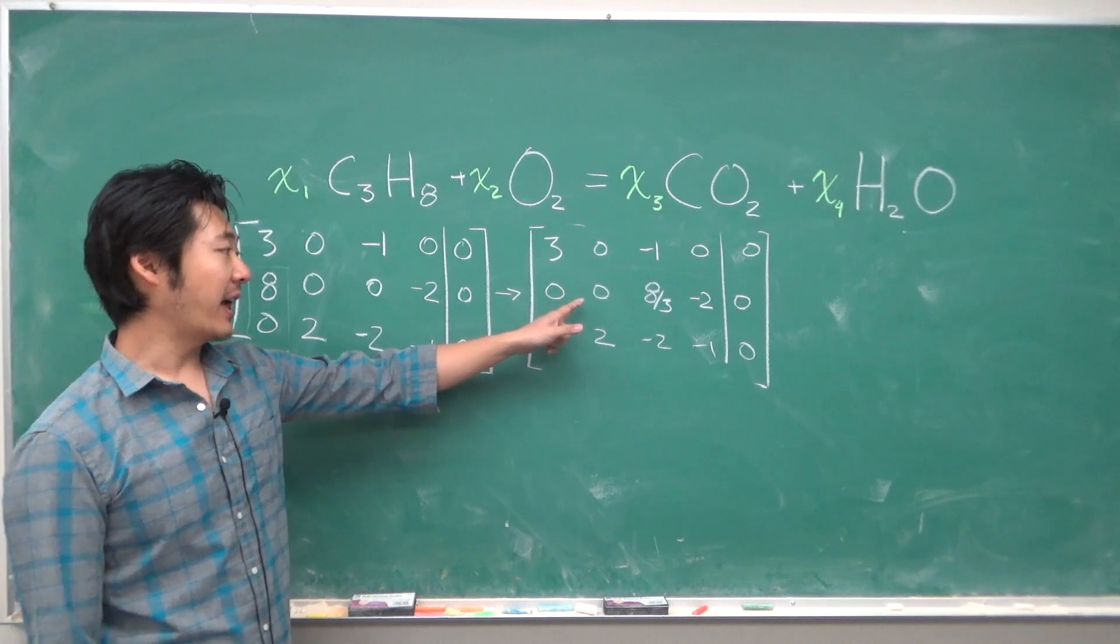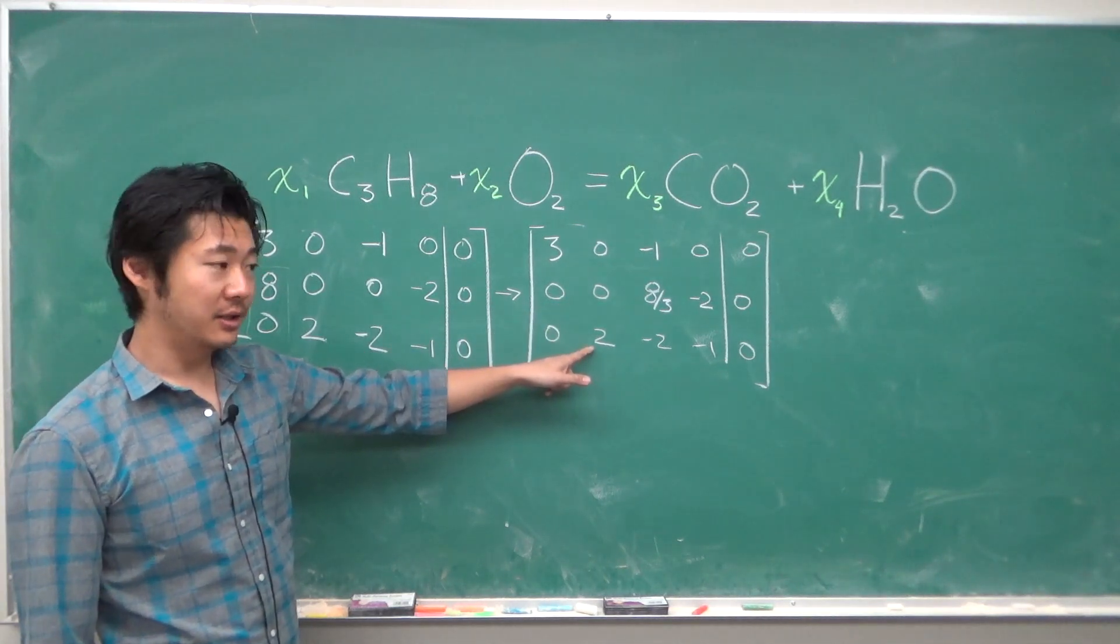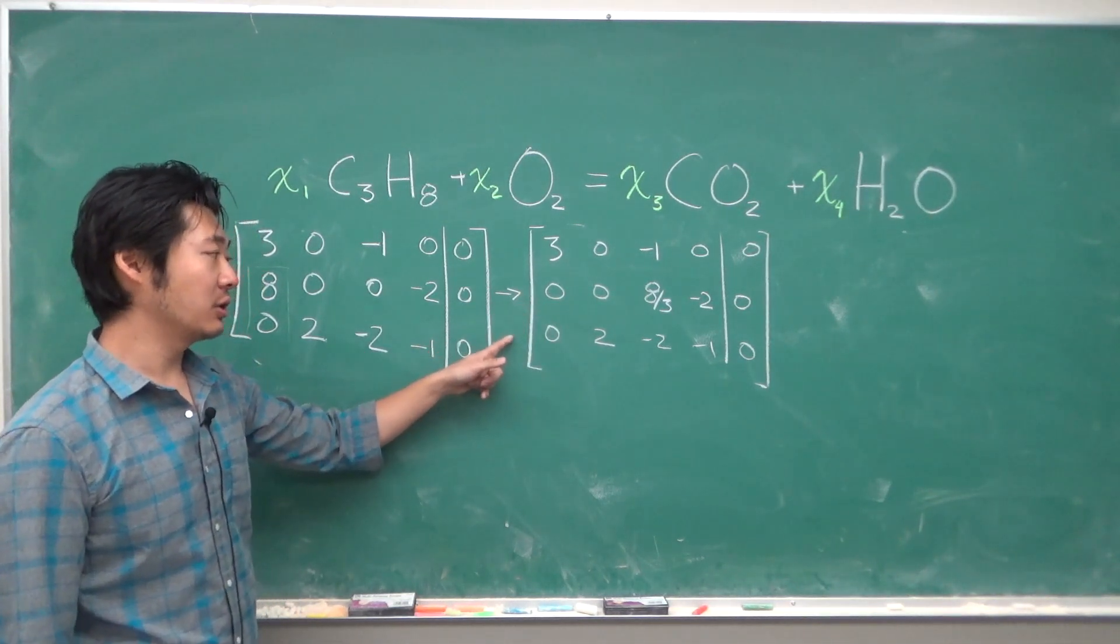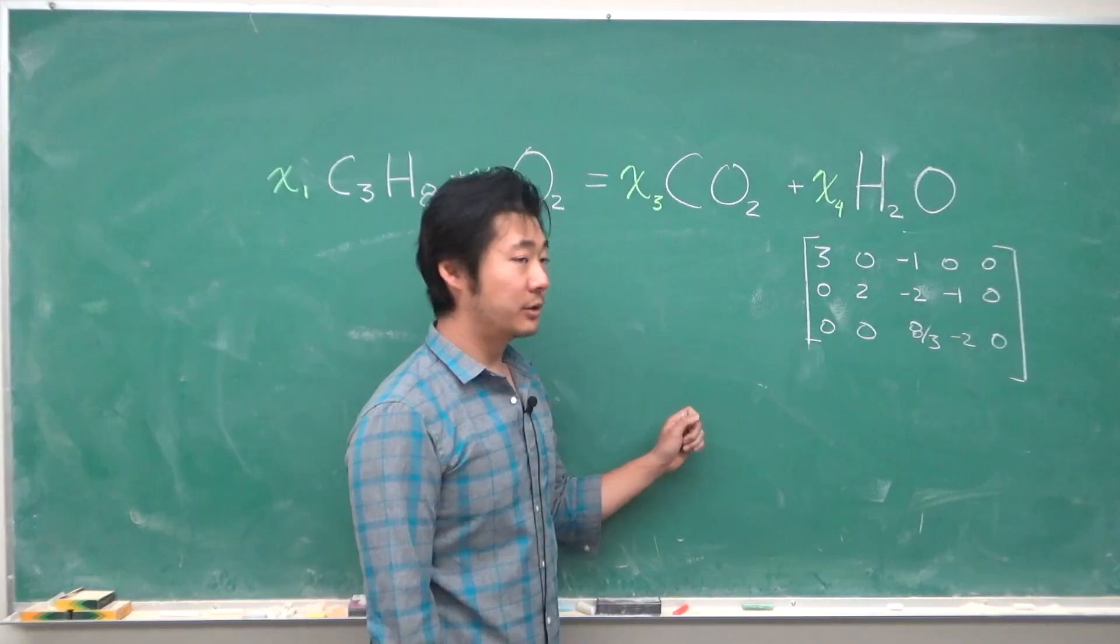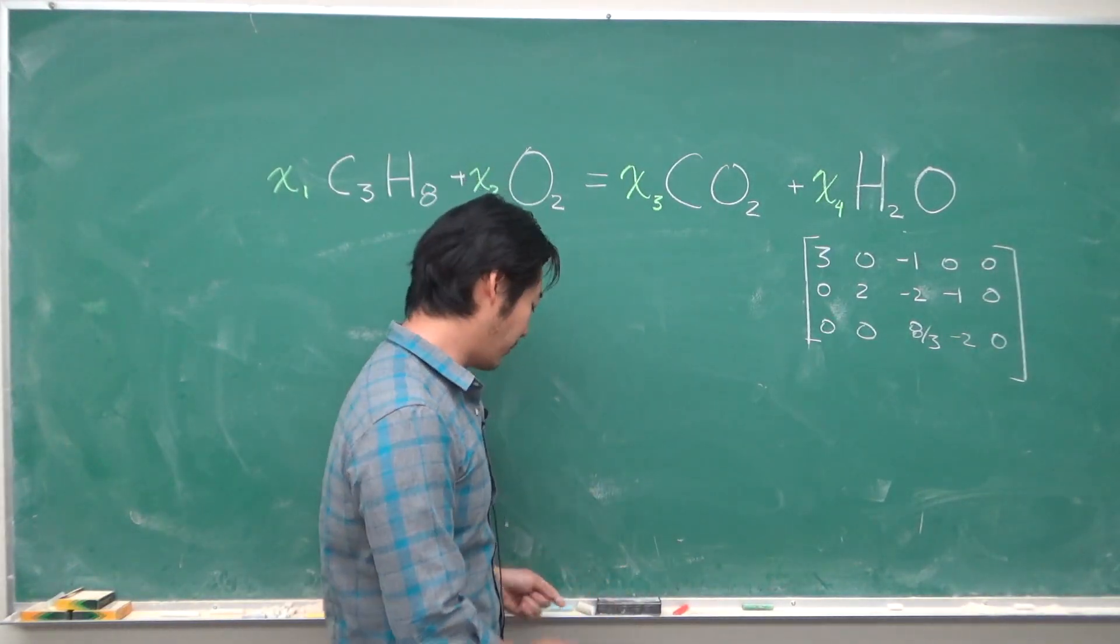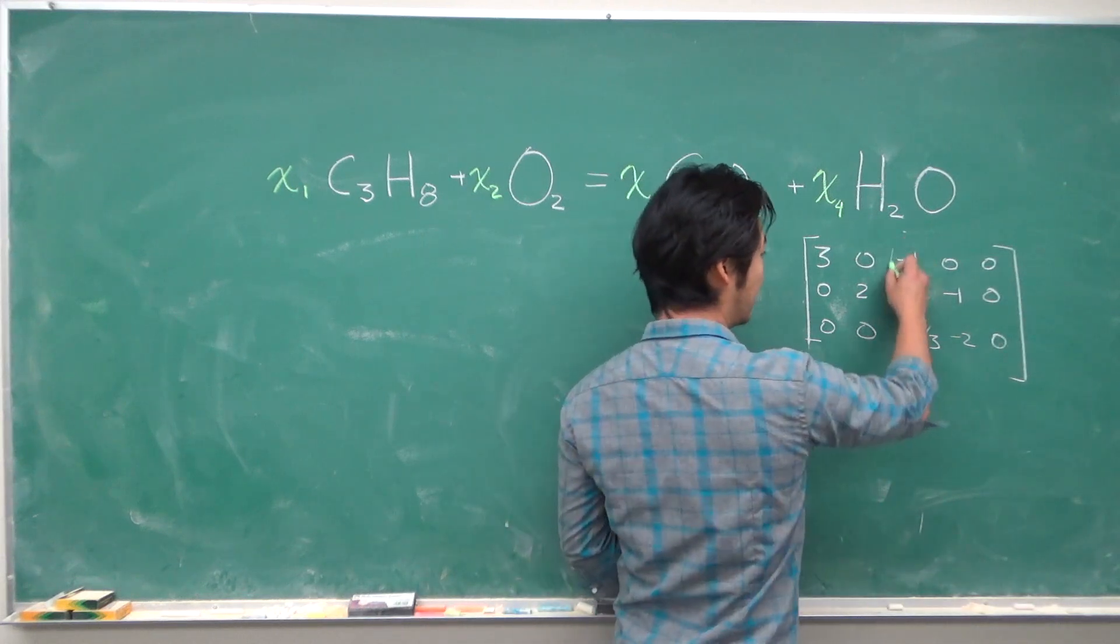Since we notice that this entry is non-zero, we'll want to interchange the rows so that we get a matrix like this. To bring it into reduced row echelon form, we want to get rid of these two entries.